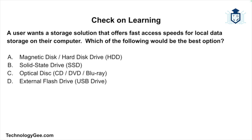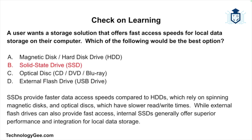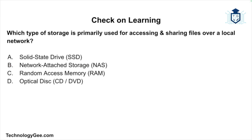Next question — a user wants a storage solution that offers fast access speeds for local data storage on their computer. Which would be the best option: a magnetic disk or hard disk drive, a solid state drive, an optical disk, or an external flash drive? The correct answer is a solid state drive. SSDs provide faster data access speeds compared to HDDs, which rely on spinning magnetic disks, and optical disks, which have slower read/write times. Internal SSDs generally offer superior performance and integration for local data storage.